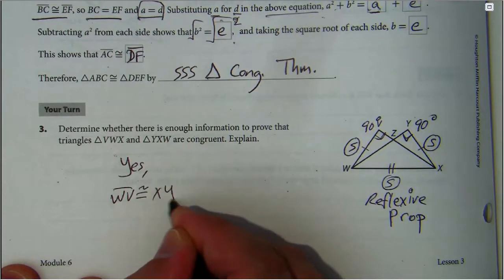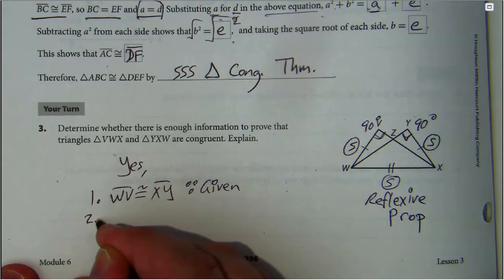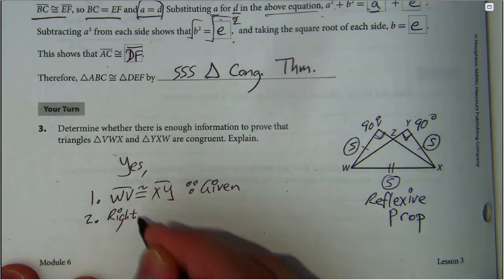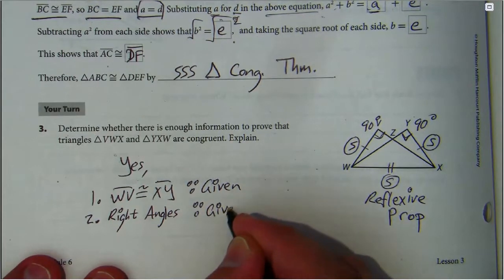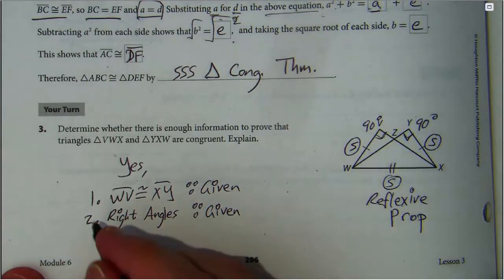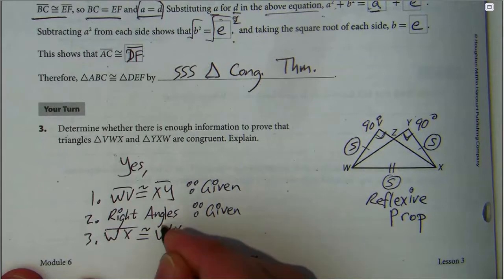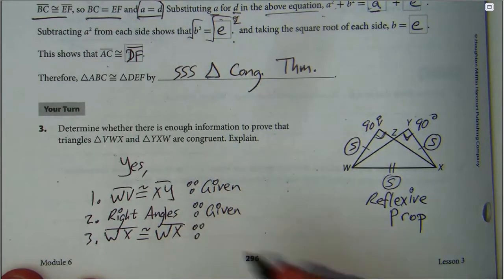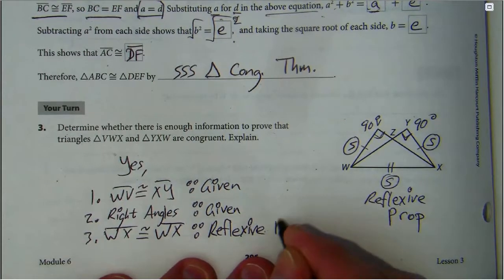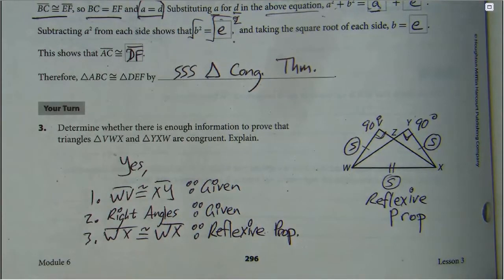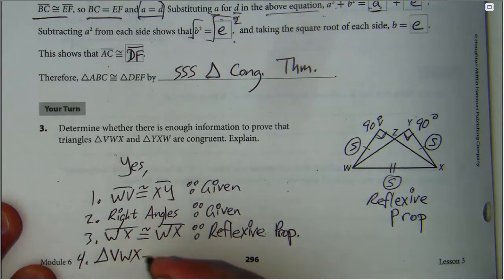They are right triangles, therefore yes we have enough information. We have WV congruent to XY, and that was given. We have the right angles, which that was given. And lastly, XW or WX is congruent to itself because they're being shared between the two triangles. That's the reflexive property. So yeah, we have enough for HL triangle congruence, and that's how we would end the proof.